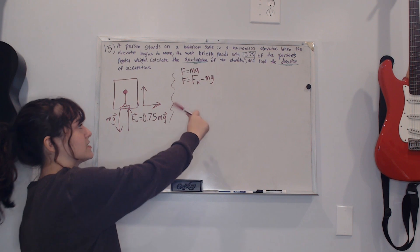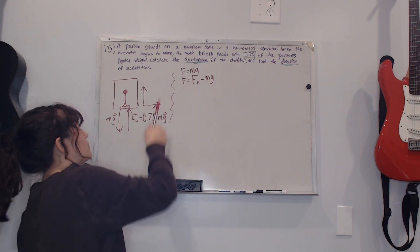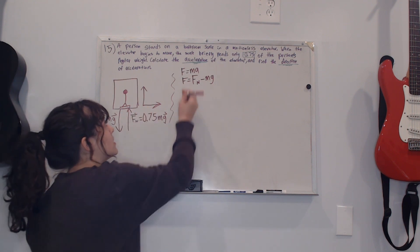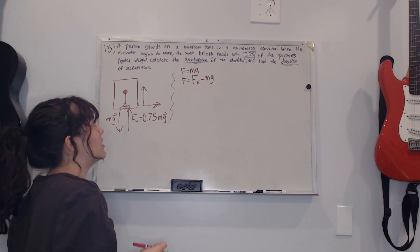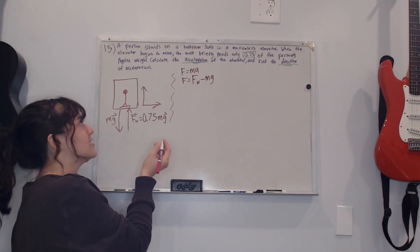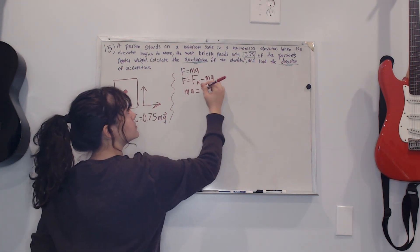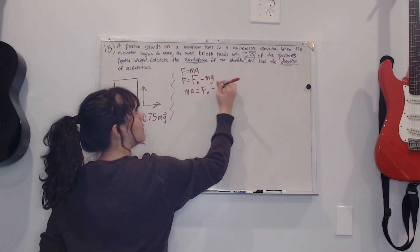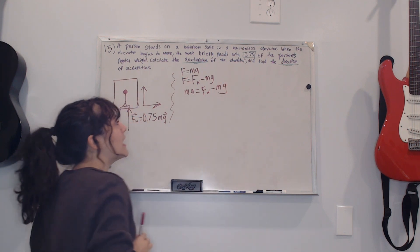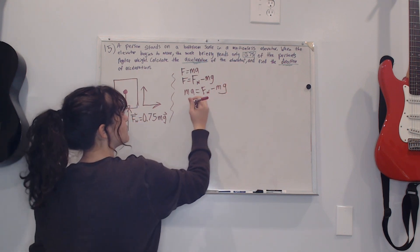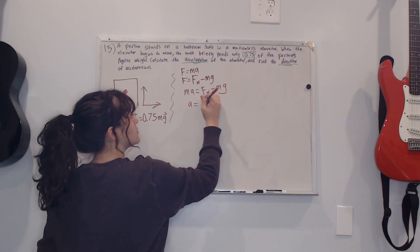I wrote down force equals mass times acceleration and also the sum of all the forces. My next step would be to put these two together which is ma equals Fn minus mg. We're solving for acceleration so we just divide everything by m, so it would look like this.